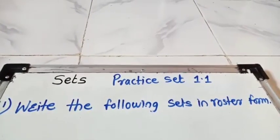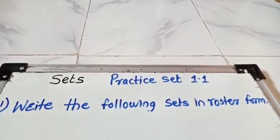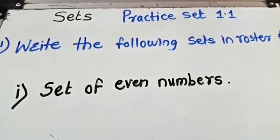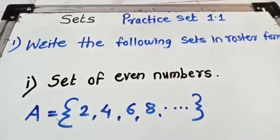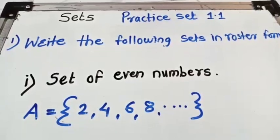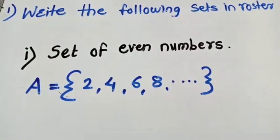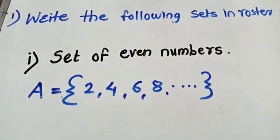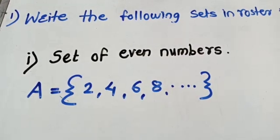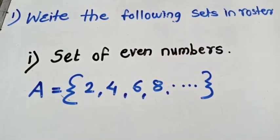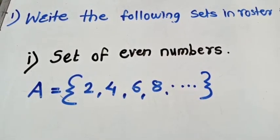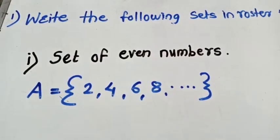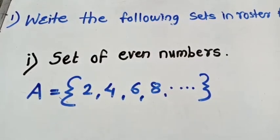Let's solve the first example: set of even numbers. We write the set of even numbers in roster form. A is a set of even numbers — you all know even numbers start from 2, 4, 6, 8, and we don't know where it ends, so we use ellipses. The set is always written in curly brackets.